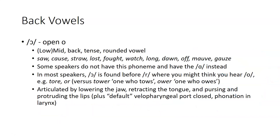The next lower back vowel is aw, referred to as open o. It is the lower of the mid-back vowels. It is tense and rounded, found in my dialect in words like saw, cause, straw, lost, thought, watch, long, dawn, off, mauve, gauze.